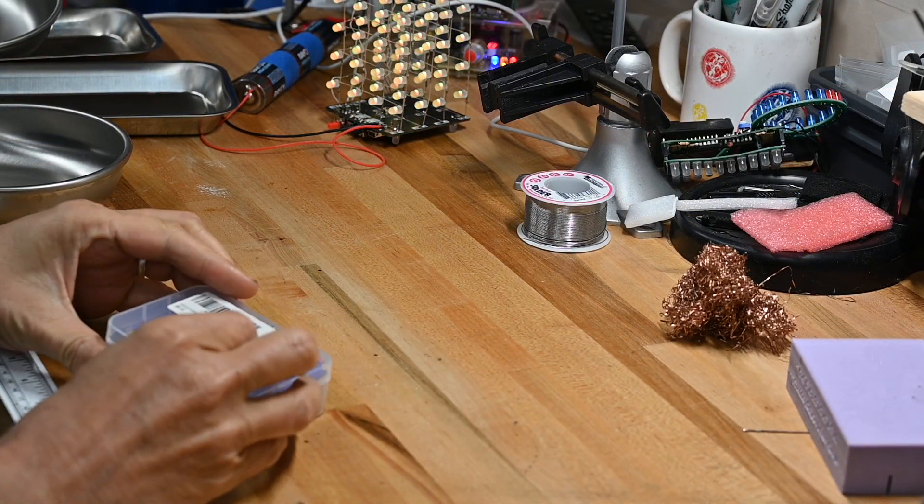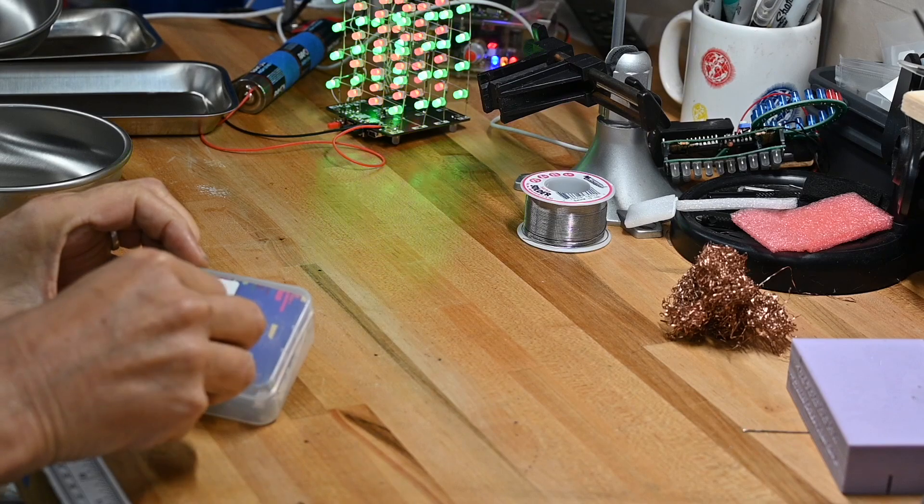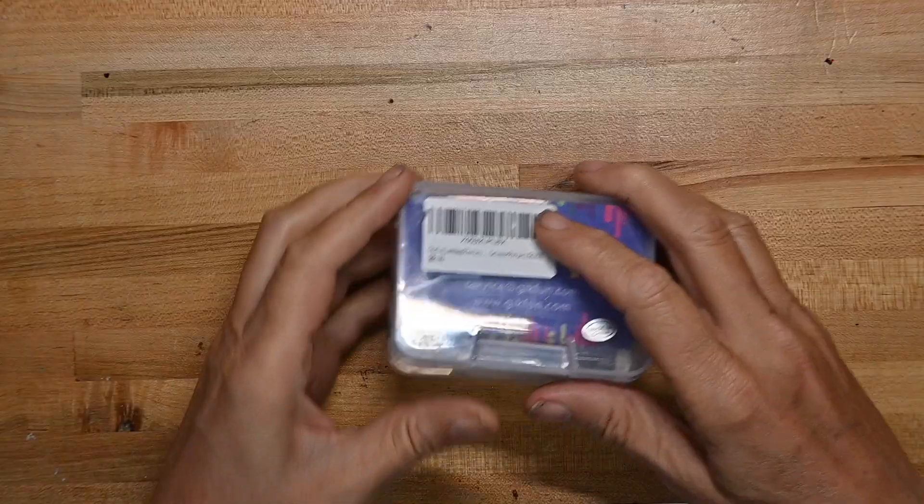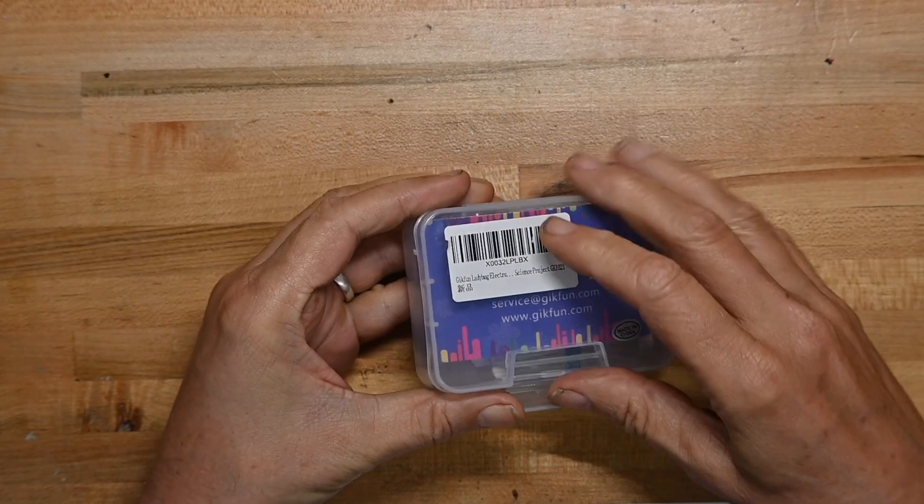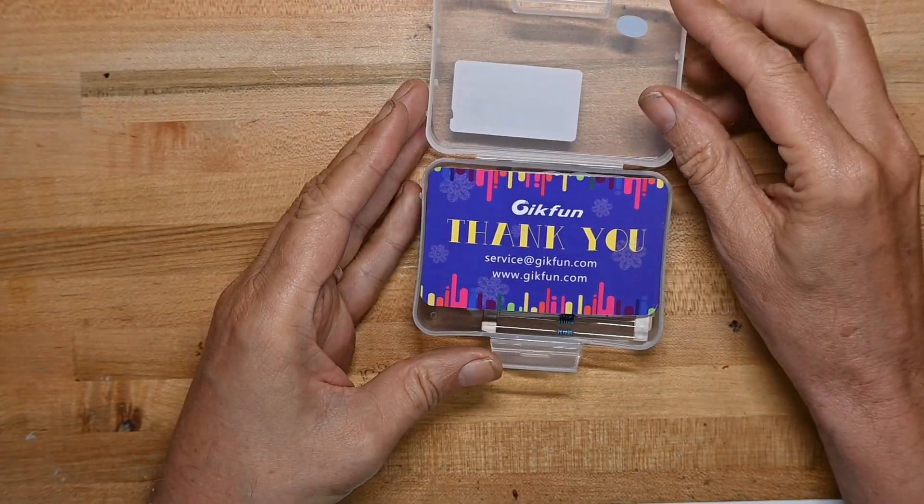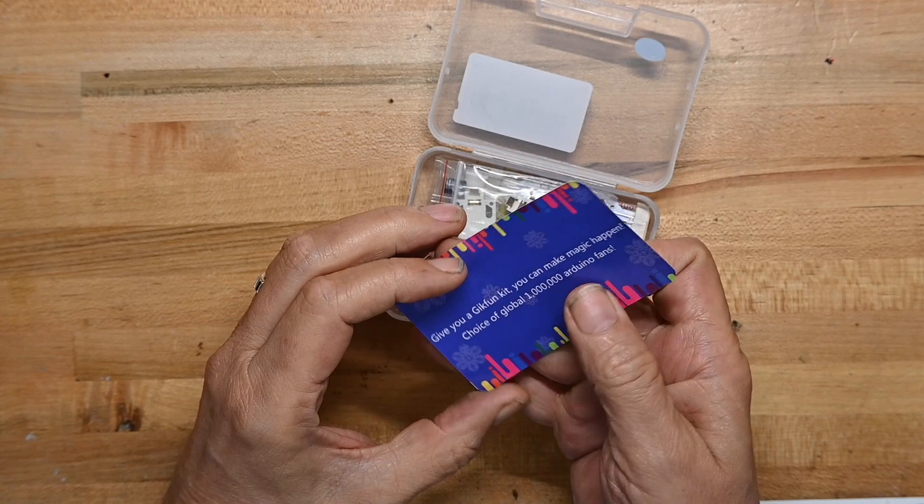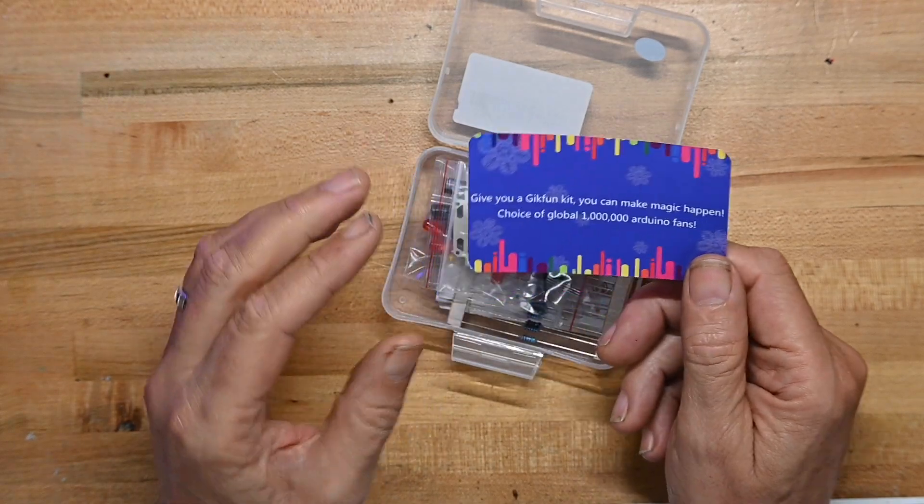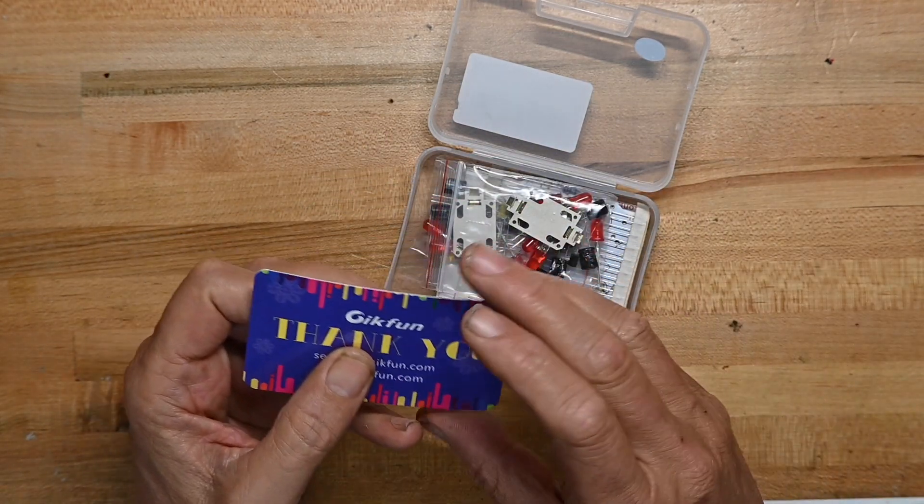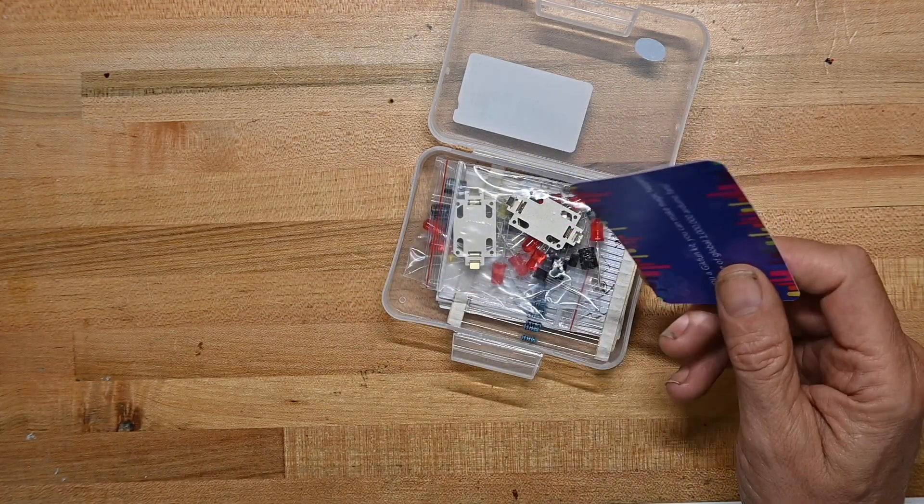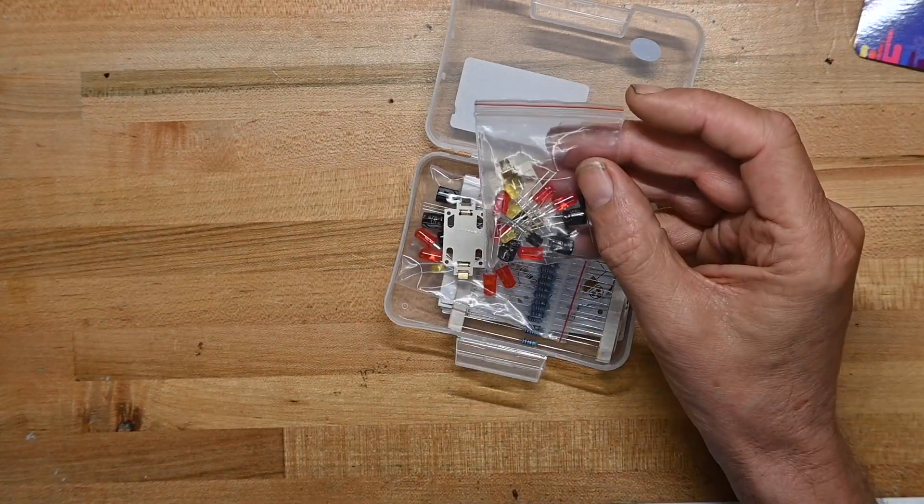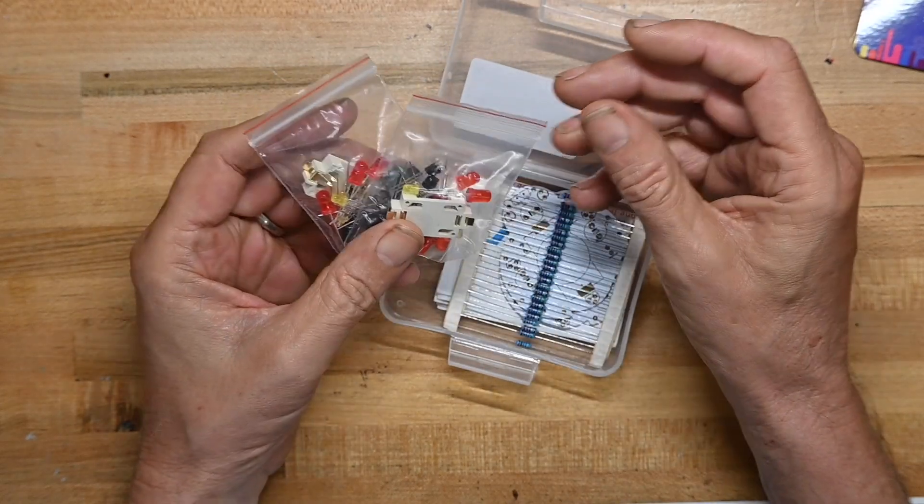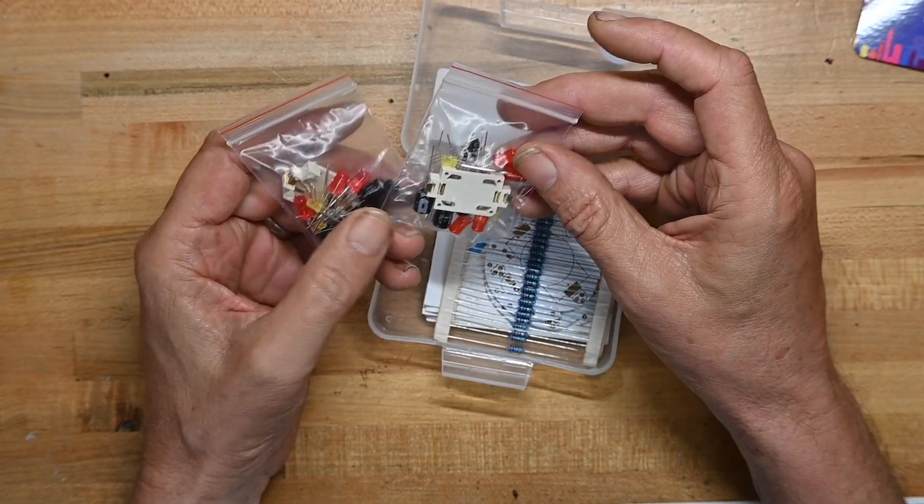Let's see what's in this little box. It's got a little piece of tape keeping it closed, a little plastic latch. GeekFun. Service at GeekFun.com. Give you a GeekFun kit, you can make magic happen. Choice of a global million Arduino fans. Even though, again, I don't think this... they say Arduino a lot, but usually these are standalone, so I'm not too worried about that. So let's see. A little bag of stuff. Two little bags of stuff because there are two ladybugs in here.